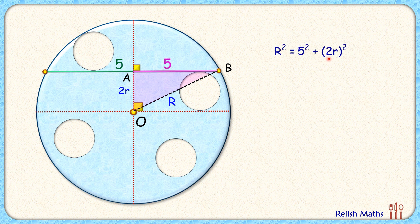Now here this (2r)² is 4r², and let's take it on the left-hand side. So we get R² - 4r² = 25. Let's multiply the full equation on left and right side by π. So we get πR² - 4πr² = 25π.